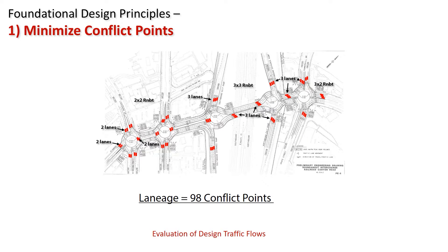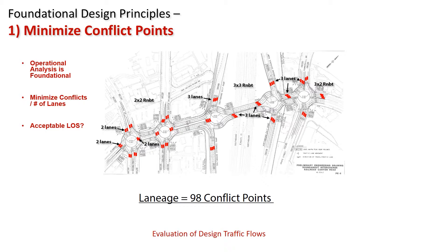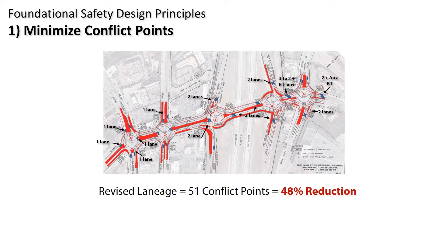Let's look at each of these one by one. First, operational analysis — minimizing conflict points. Here's a project I worked on a few years back where the initial concept had 98 conflict points, with three-lane and two-lane entries. As the first step in a peer review, part of the operational analysis is understanding what's an acceptable level of service on your 20-year design traffic. We don't design anything else for level of service A or B for 20 years. Using Rodel, we ended up with 48% fewer conflict points — that's the first step to a safer set of roundabouts.